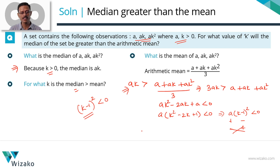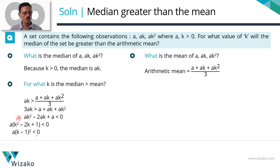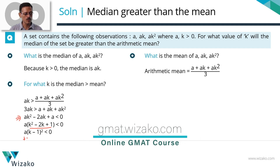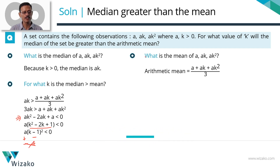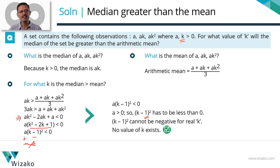To summarize the entire proceedings: the median is AK, the mean is (A + AK + AK²)/3. Cross multiplying and taking all terms to one side gives A(K² − 2K + 1) < 0, which is A·(K−1)² < 0. Since A cannot be negative and the square of a real number can never be negative — it can either be 0 or positive — no such K exists. So no value of K will make the median of these three numbers greater than the mean.